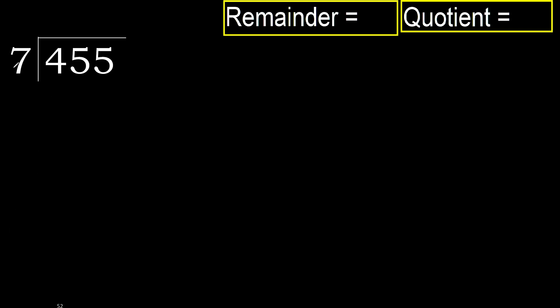455 divided by 7. 4 is less than 7, therefore move to the next digit. 45 is not less, therefore we work with 45.